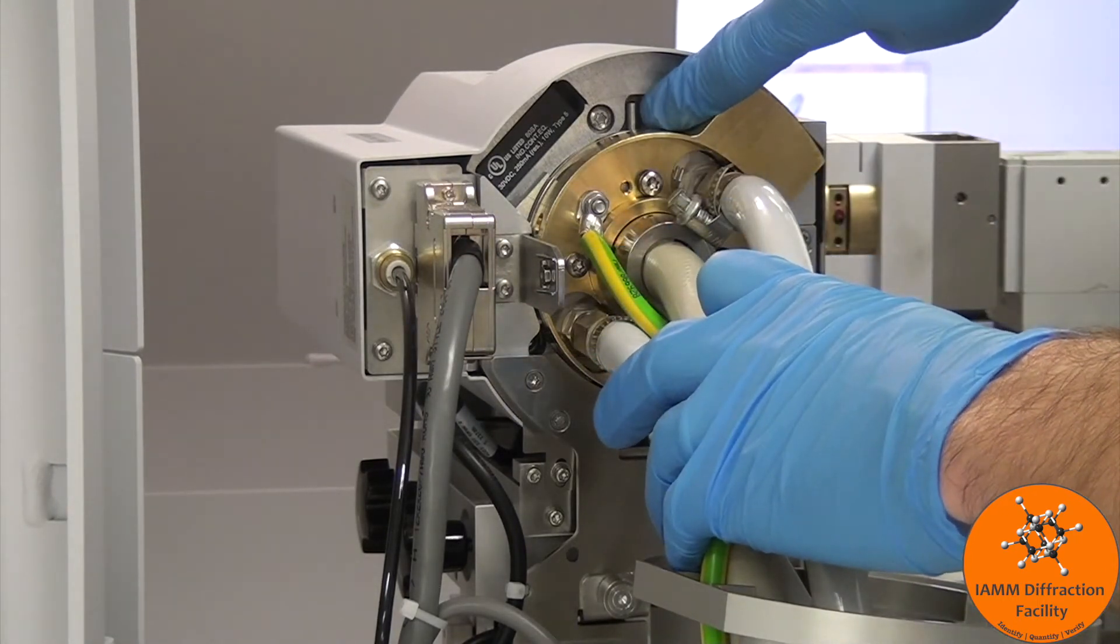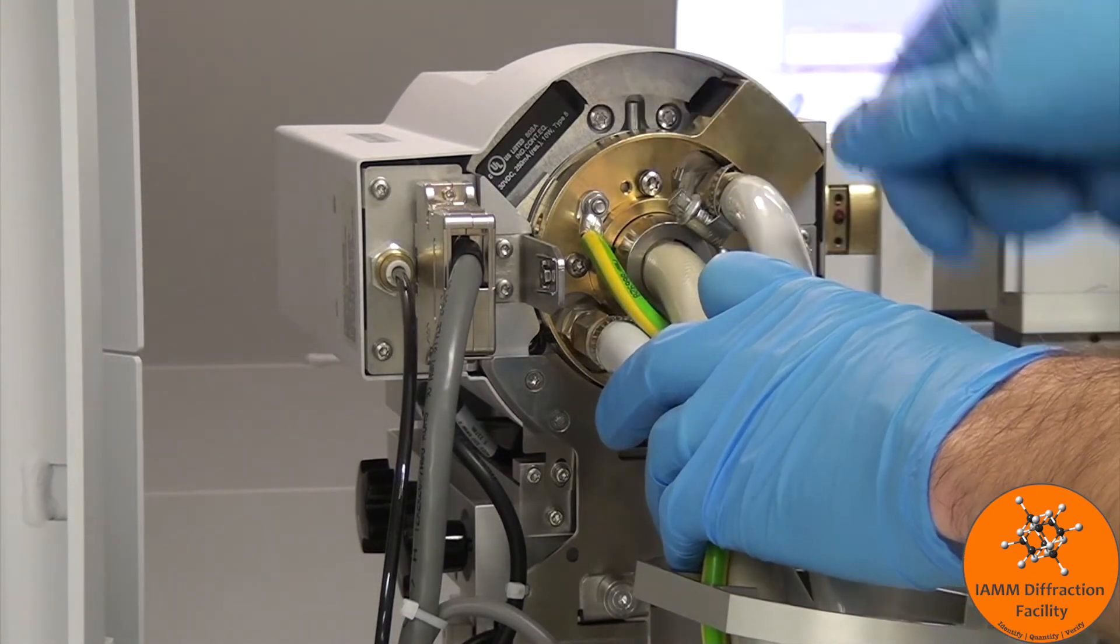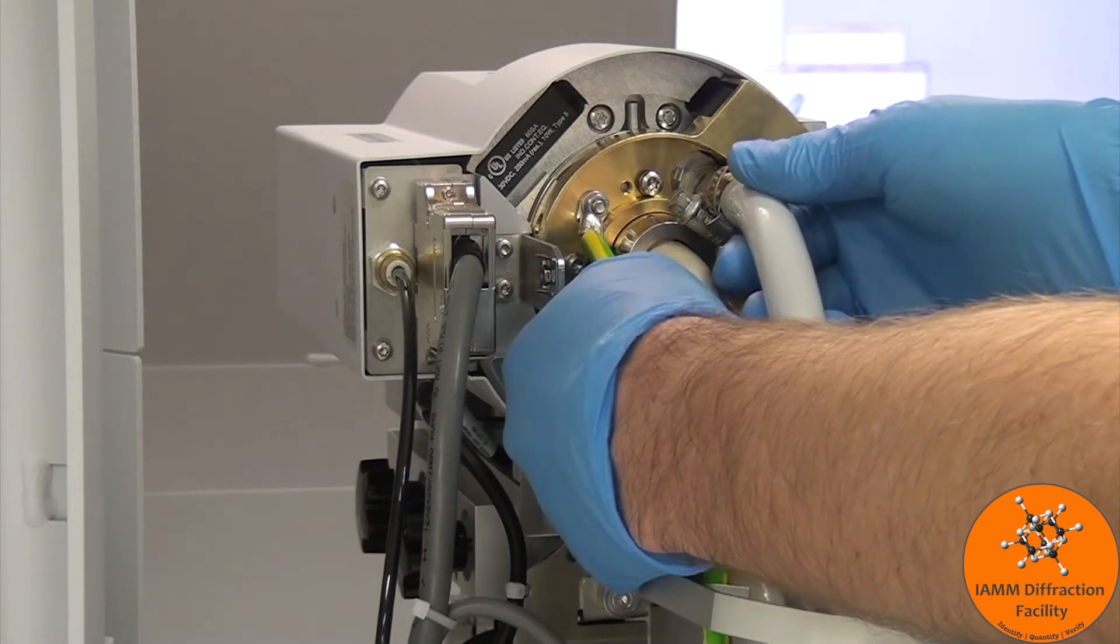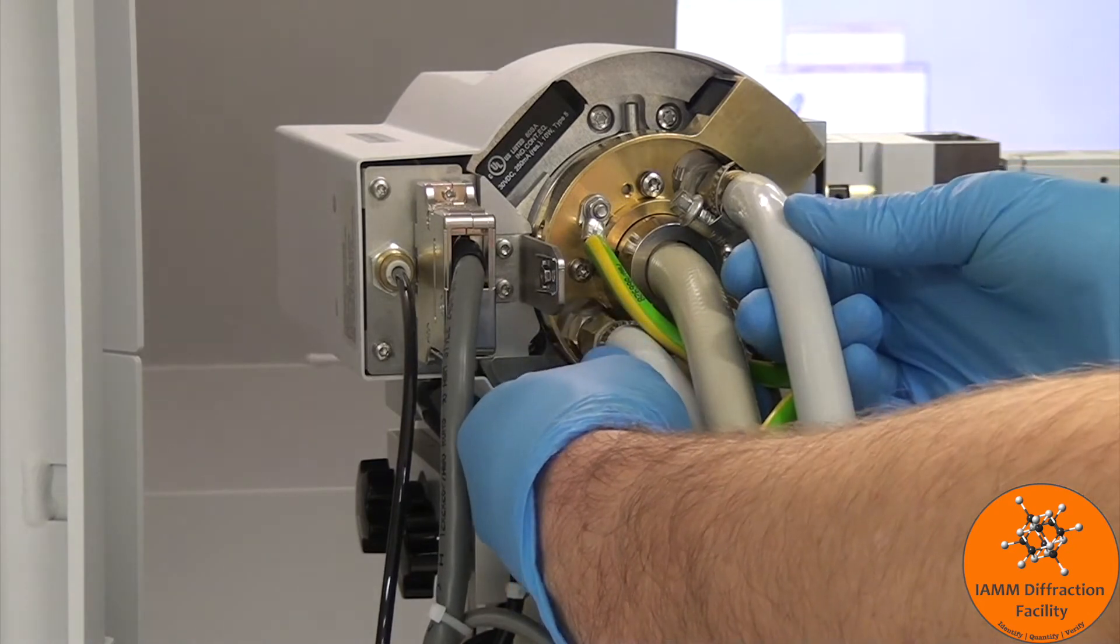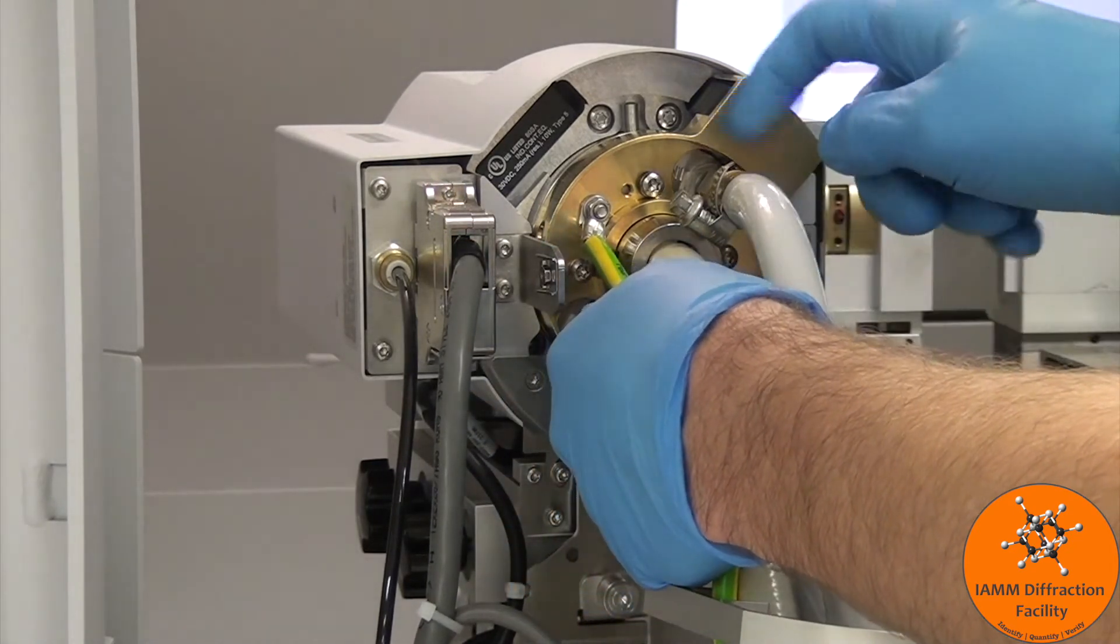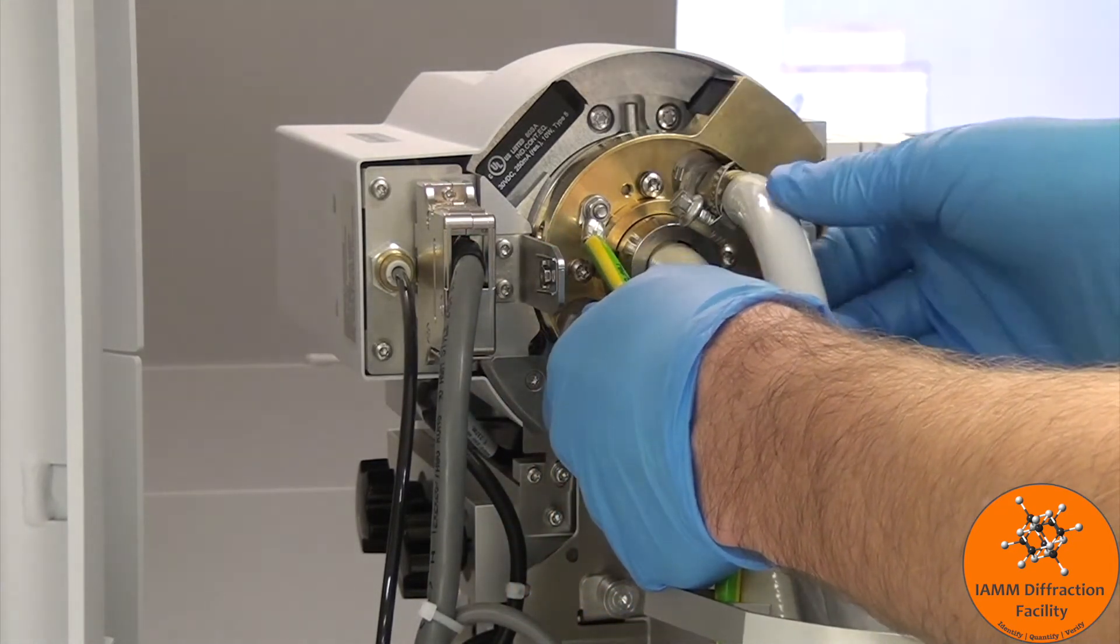You see that there is this little rod here that goes into a seating position. All we are going to do is pull the entire tube back somewhat. We can pull it from the water lines. We now see that the little rod has come out.